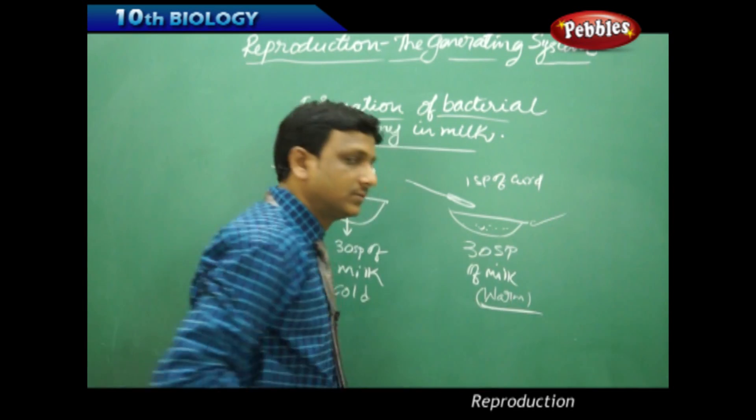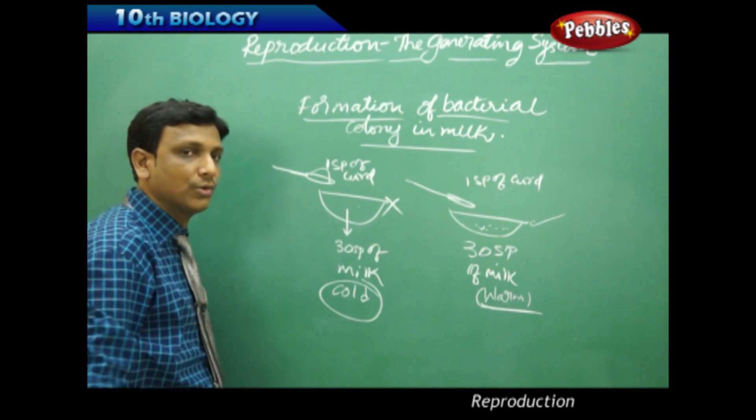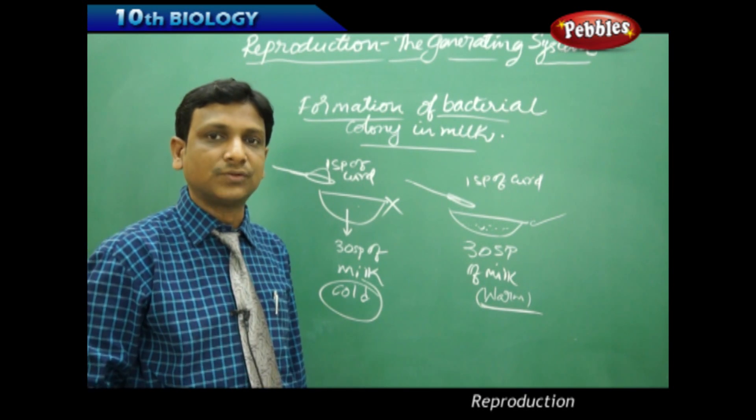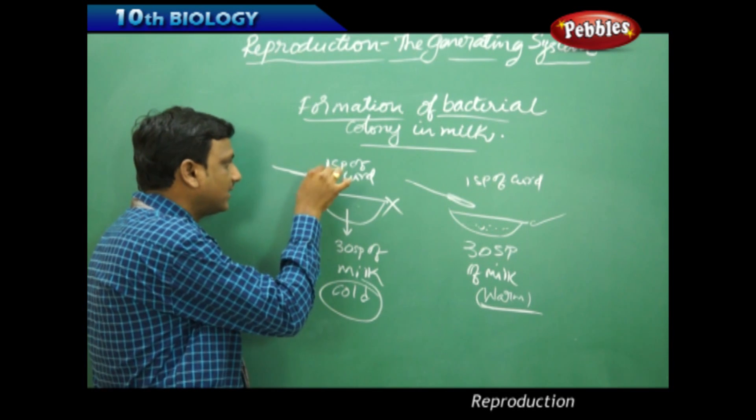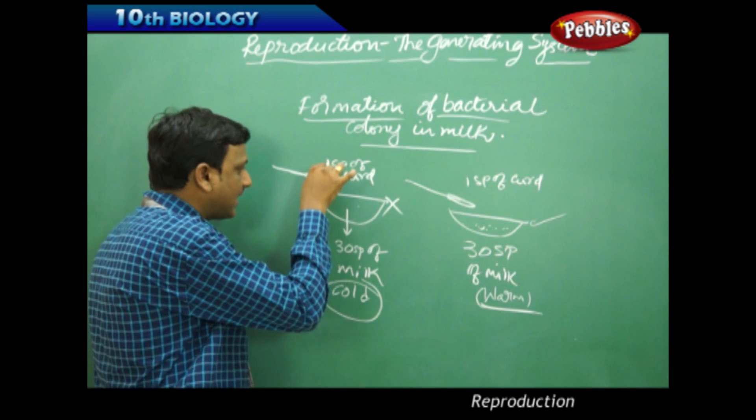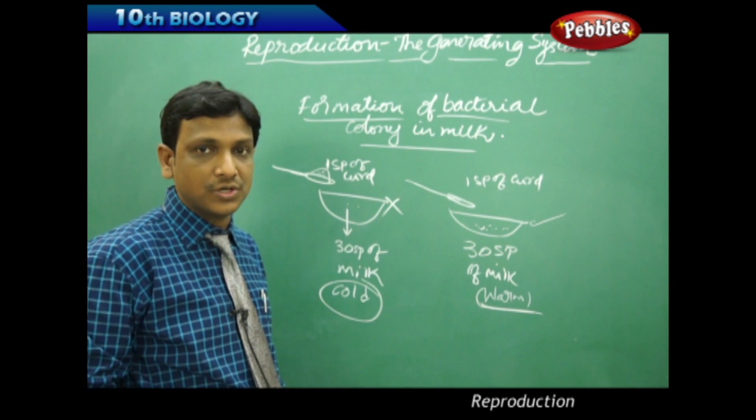But what about the cold milk? No curdling takes place because the temperature is not favorable for the growth or reproduction of the bacteria which are there in the sample we added. The bacteria could not turn the milk to curd because they could not grow in number.